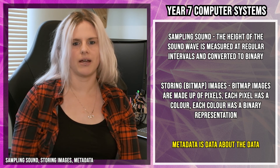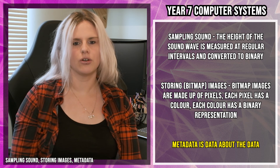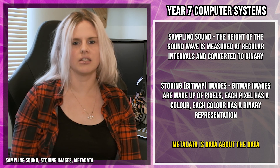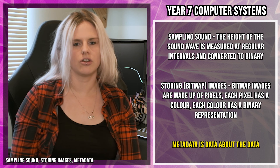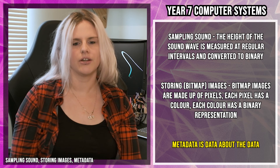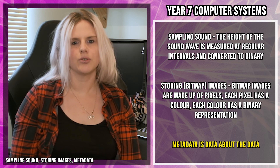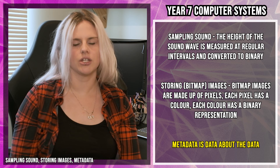Metadata is data about the data. Metadata about a song could include the name of the artist, the name of the song, and how long the song is. Metadata about an image could include where the image was taken if GPS was turned on, and the height and width of the image. So metadata tells us more information about the file we are looking at.